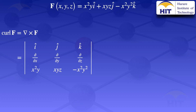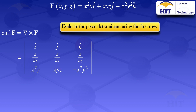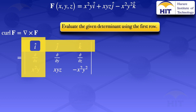The next step is to evaluate that determinant using the first row. We look at the first element, î, close its row and column, and note that î sits on a positive in the sign array. We then take the determinant of the uncovered elements: the partial derivative with respect to y of −x²y² minus the partial derivative with respect to z of xyz. So for the î component we have: (∂/∂y)(−x²y²) − (∂/∂z)(xyz)î.